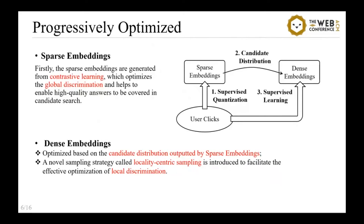To address the above problems, we propose the Progressively Optimized Document Representation. Instead of running unsupervised condensation on the learned dense embeddings, the sparse embeddings are generated from contrastive learning, which optimizes global discrimination and helps to ensure high-quality answers are covered in candidate search. More importantly, the sparse embeddings formulate the candidate distribution, on top of which the dense embeddings can be optimized for local discrimination. A novel sampling strategy called locality-centric sampling is introduced to optimize the local discrimination. In the following section, we will present the training methods for sparse and dense embeddings in more detail.